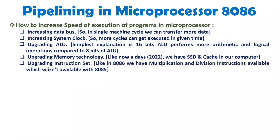My dear students, if you increase the complexity of instructions or upgrade your instruction set, you can also increase speed of execution. For example, with 8085 we did not have multiplication or division instructions, but with 8086 a single instruction can perform multiplication and division. With 8085, a long program was needed for those tasks. So by upgrading the instruction set of a microprocessor, you can upgrade speed as well.